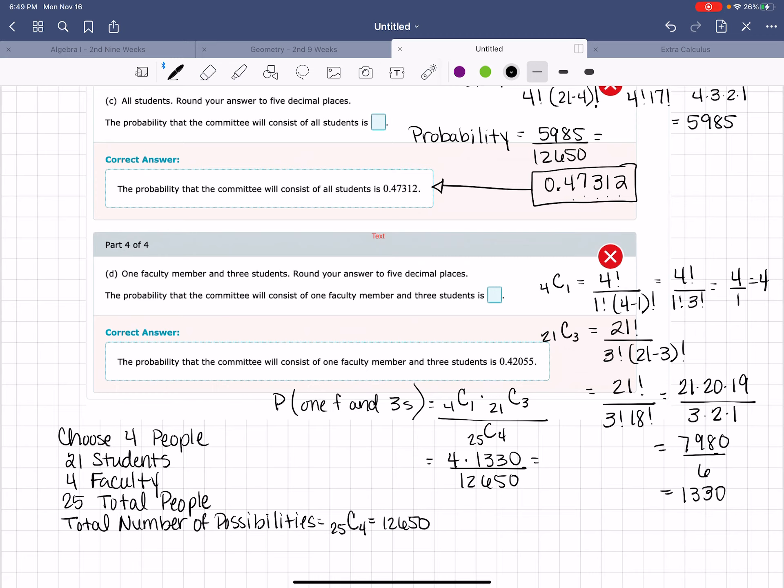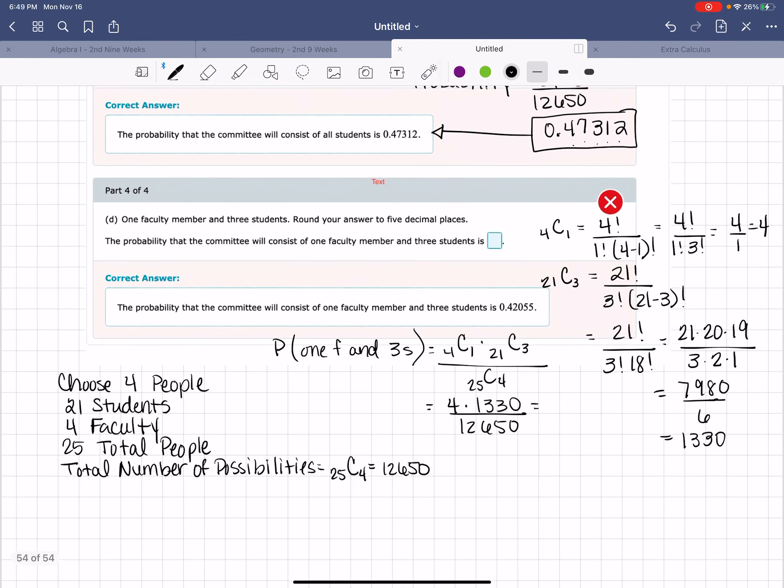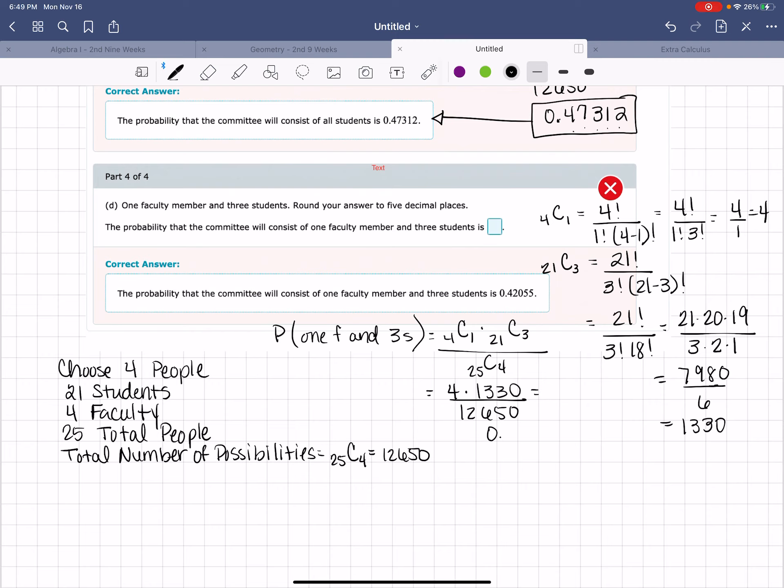And that will give me 4 times 1,330 divided by 12,650, which winds up giving me 0.420553. I went to 5 decimal places. There's a 3 back there. I can simply chop that off. And that does give me my answer of 0.42055.